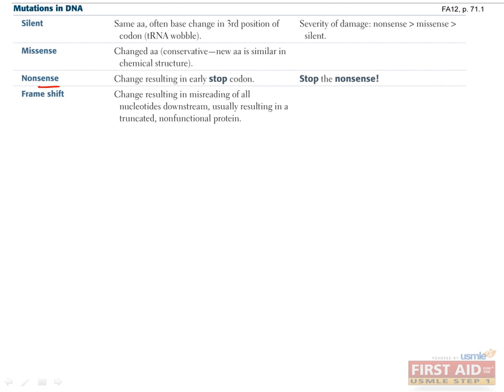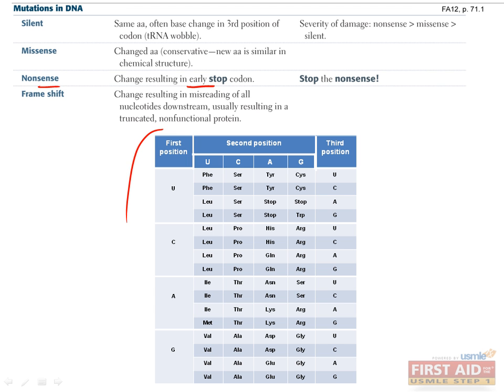Next is nonsense mutations, which is when the nucleotide change converts a codon that codes for an amino acid to one that codes for a stop codon. If we take another look at our codon table, you can see that UUA normally codes for leucine, but if that middle nucleotide becomes an A, then we have UAA, which is a stop codon.